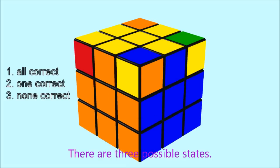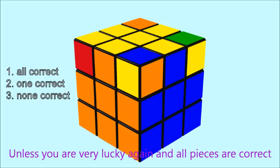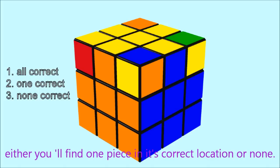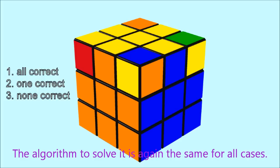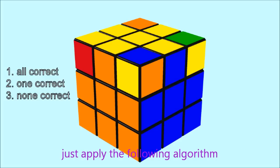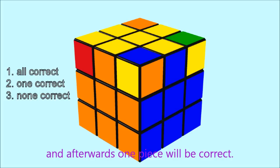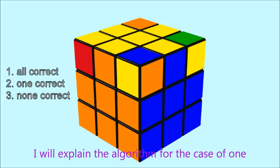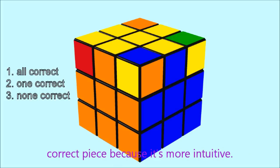There are three possible states. Unless you are very lucky again and all pieces are correct, either you will find one piece in its correct location or none. The algorithm to solve it is again the same in all cases. If you don't find any piece in its correct position, just apply the following algorithm and afterwards one piece will be correct. I will explain the algorithm for the case of one correct piece, because it's more intuitive.